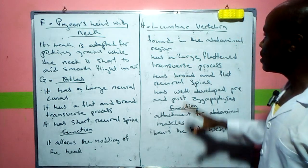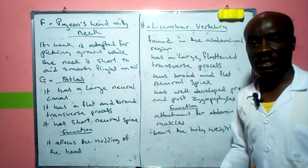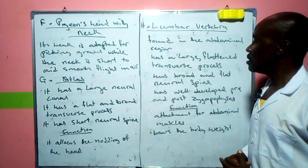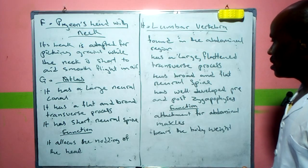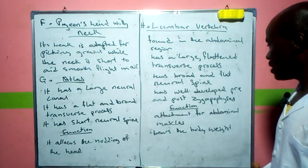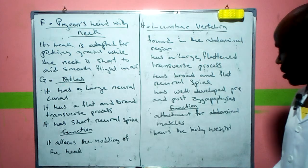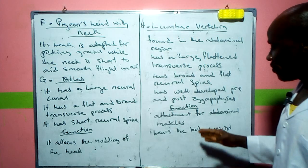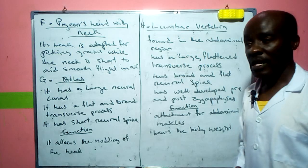The lumbar vertebra is found in the abdominal region of the body. It has a large flattened transverse process, a broad flat neural spine, and well-developed pre- and post-zygapophyses. Its functions include attachment of muscles and supporting the body.